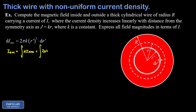We integrate from zero to little r, since we add up contributions as the rings go from the center of the wire to the edge of the Ampere loop where r prime equals little r. This is a simple integral — the integral of a variable squared gives one-third times that variable cubed — so we end up with (2/3)πk times r prime cubed, evaluated from zero to little r. Substituting in the limits gives zero from the lower limit, so I enclosed equals (2/3)πk times little r cubed.